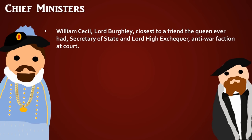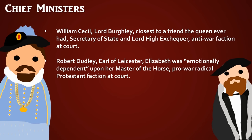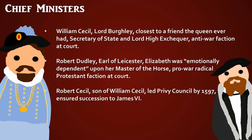Elizabeth relied heavily on several key ministers. William Cecil, Baron Burghley, described as the closest to a friend the Queen would ever have, served as Secretary of State and Lord High Treasurer and led the anti-war faction at court — very level-headed, as war cost a great deal of money. Robert Dudley, Earl of Leicester, known as 'the Gypsy,' was said by John Guy to be someone Elizabeth was emotionally dependent on; he was Master of the Horse, more pro-war, flamboyant, and of the more radical Protestant faction. Robert Cecil, William's son, led the Privy Council by 1597 and ensured the smooth succession to James VI after Elizabeth's death.